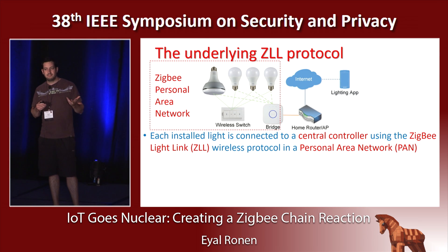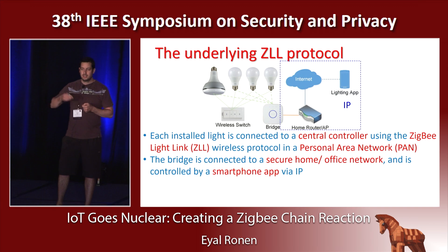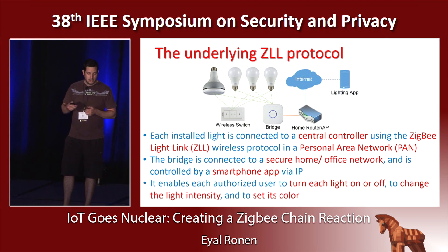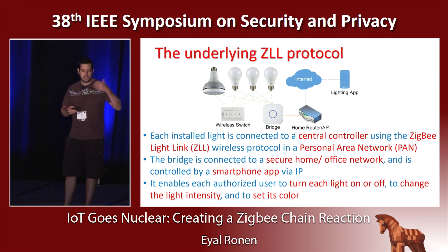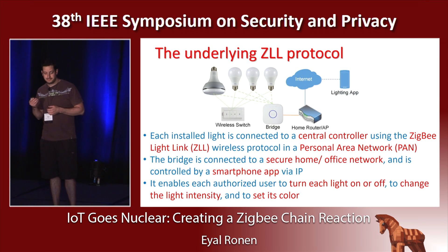The controller can be either a very simple wireless switch or a bridge that connects to the secure home network, and from that it's connected to the internet and can be controlled by a smartphone app. The user can then turn the lights on and off, change the color, and other features that are supposed to be very, very cool.